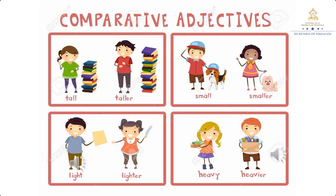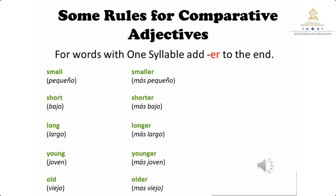The second one. Vamos a nuestra segunda ilustración. Podemos llamarlo Pedro y Ana. Pedro has a small dog, but Ana's dog is smaller. Pedro tiene un perro pequeño, pero el perrito de Ana es más pequeño. So we already know how to make comparisons between persons or things. Now we have to learn some rules for comparative adjectives.